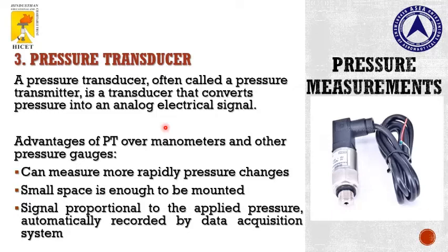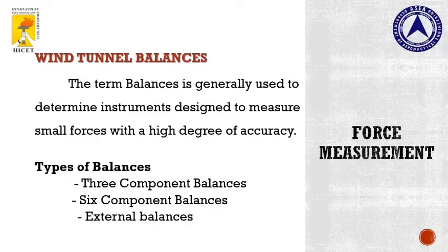In a pressure transducer, the sensors measure the pressure and convert it into an electrical signal or analog signal. There are more advantages when comparing this to a manometer: it can measure rapid pressure changes and in very small spaces. The signal applied in the pressure transducer is recorded by the data acquisition system, which is a very advanced system.